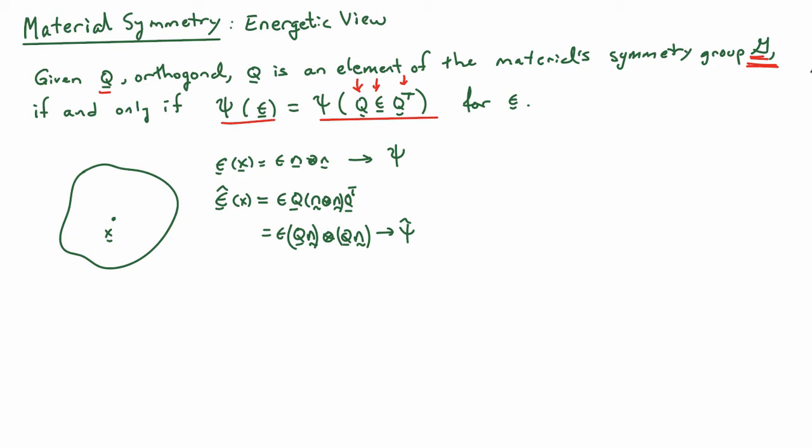If I consider epsilon hat, which is epsilon QN outer product NQ transpose, I'm essentially applying Q on the front and Q transpose on the back to my original epsilon. I'm going to compute a new value of the free energy, psi hat, and the material symmetry requirement tells me that psi is equal to psi hat.